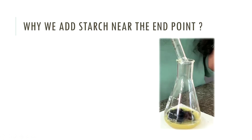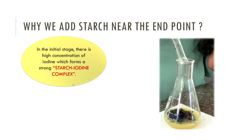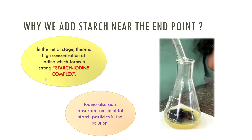Why do we add starch near the end point? In the initial stage there is a high concentration of iodine which forms a strong starch-iodine complex. That complex is difficult to break easily. That is why iodine also gets absorbed on the colloidal starch particle, so we add starch only near the end point.